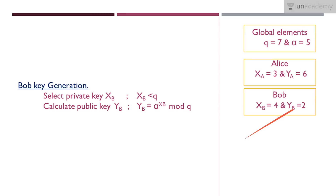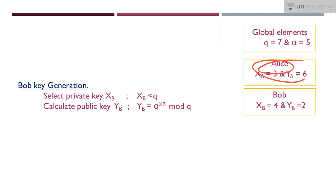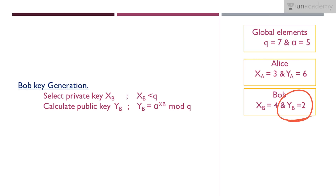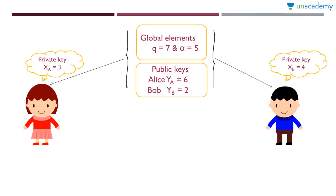Up to this point, Alice and Bob only used global elements. Now, to calculate the secret key, they share their public keys. Alice's public key y_A = 6 and Bob's public key y_B = 2 are shared. The global elements and public keys are shared, but the private keys are kept secret.